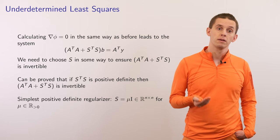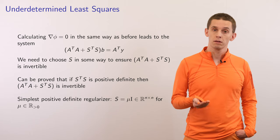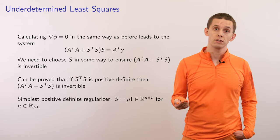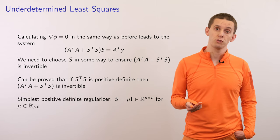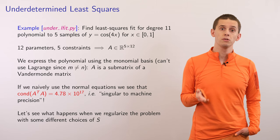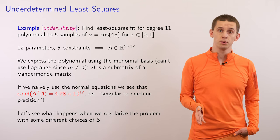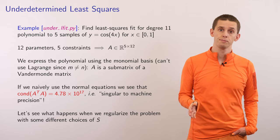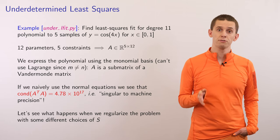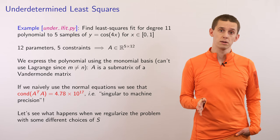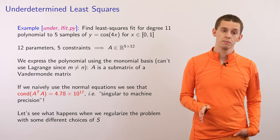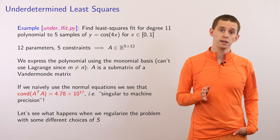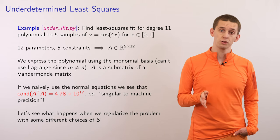You can prove that if S transpose S is positive definite, then the matrix A transpose A plus S transpose S will be invertible. The simplest choice would be to set S equal to mu times the identity matrix, for some constant mu. We'll now demonstrate this using a Python example, under_lfit.py, that fits a degree 11 polynomial to the function y equal cosine(4x). We'll use five data points equally spaced over the range from 0 to 1, giving us 12 parameters and only five constraints — an under-constrained system. Our matrix A will be 5 by 12, expressing the polynomial in terms of the monomial basis.